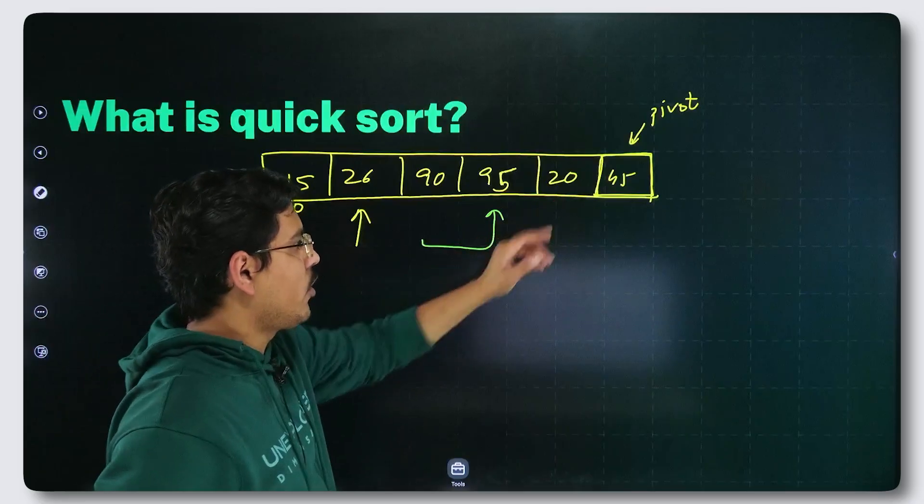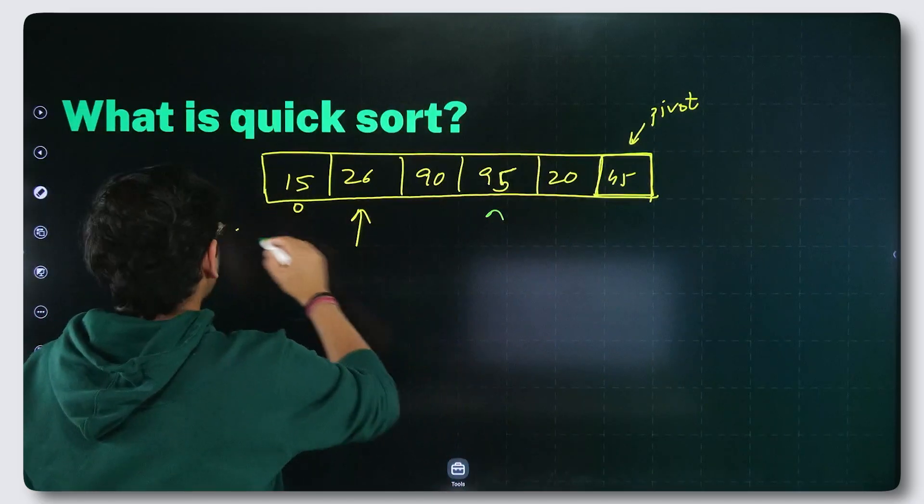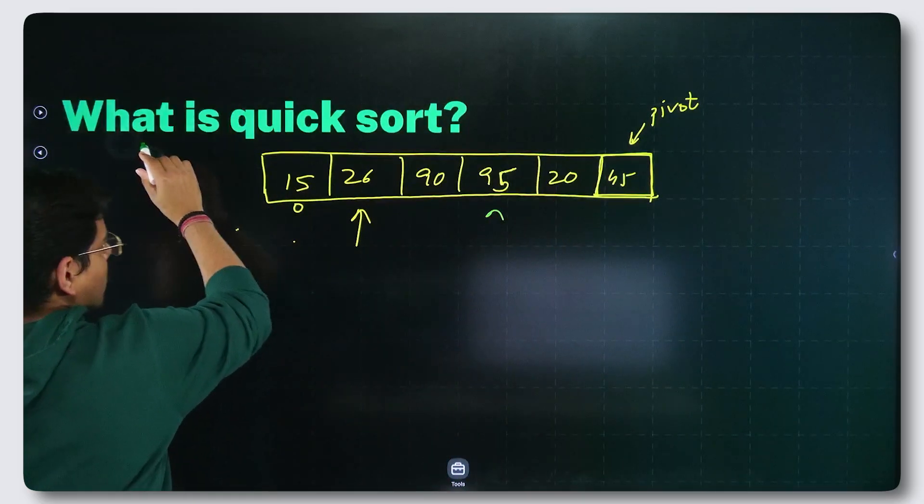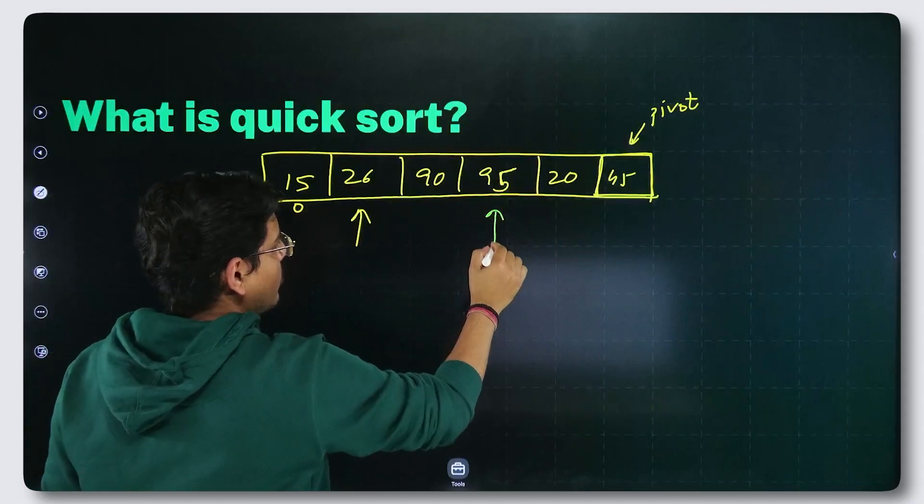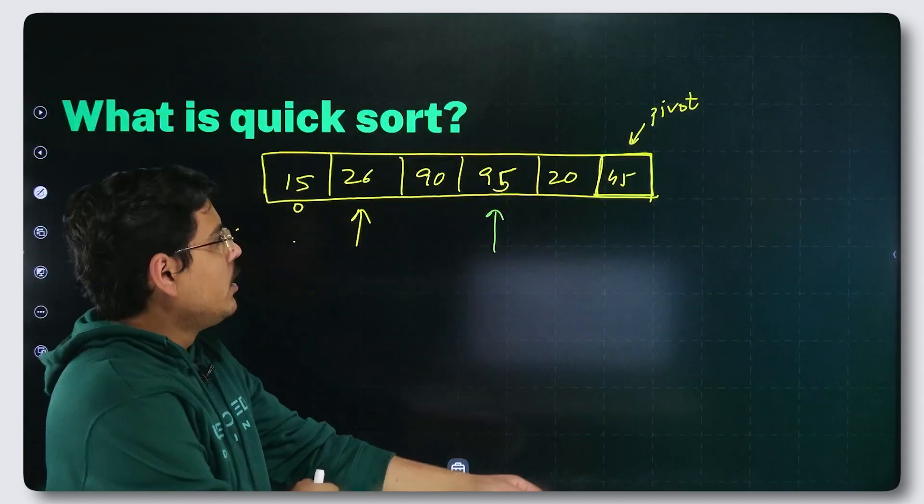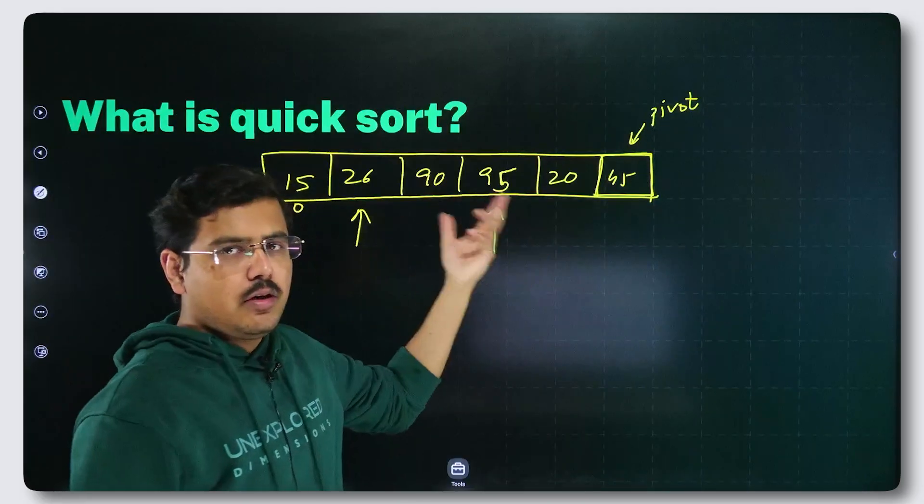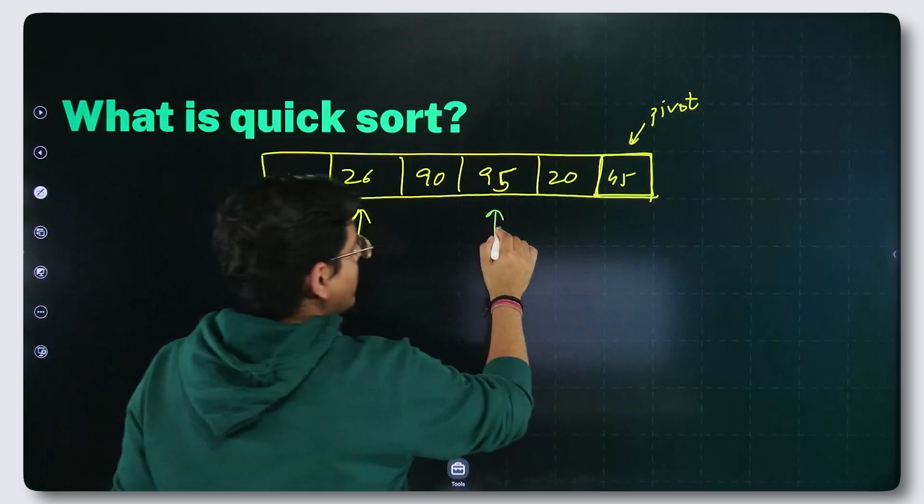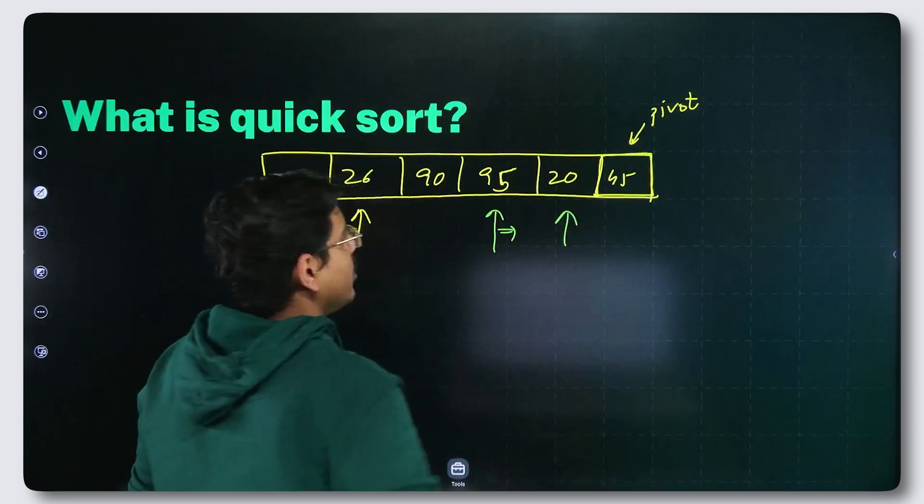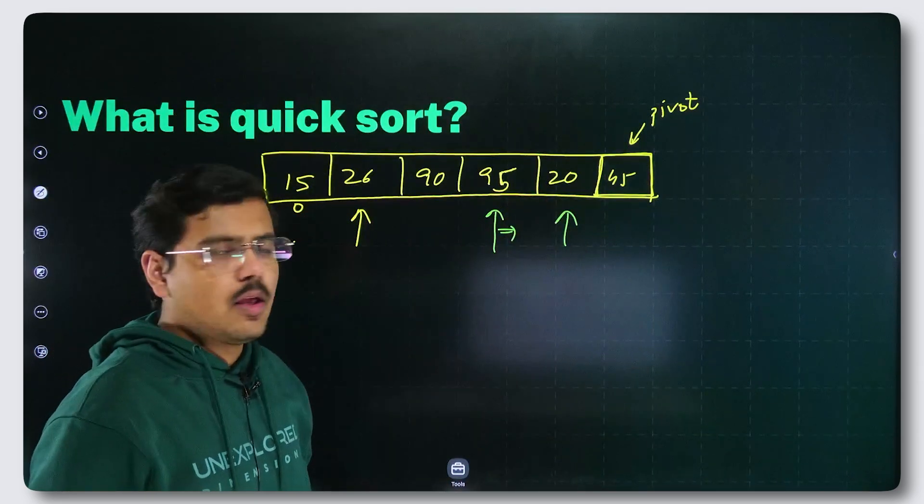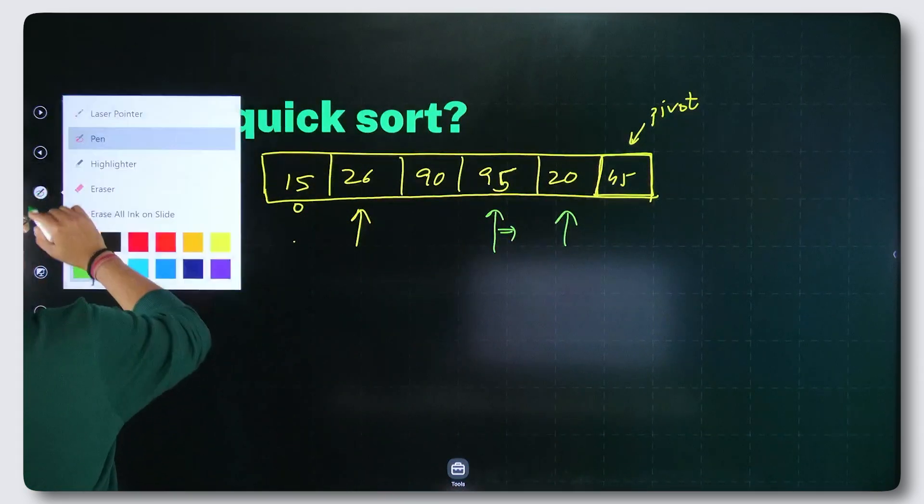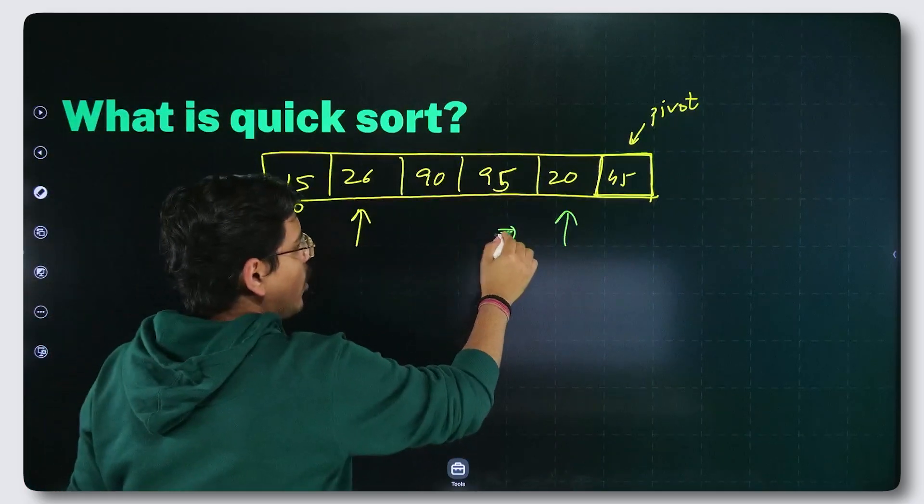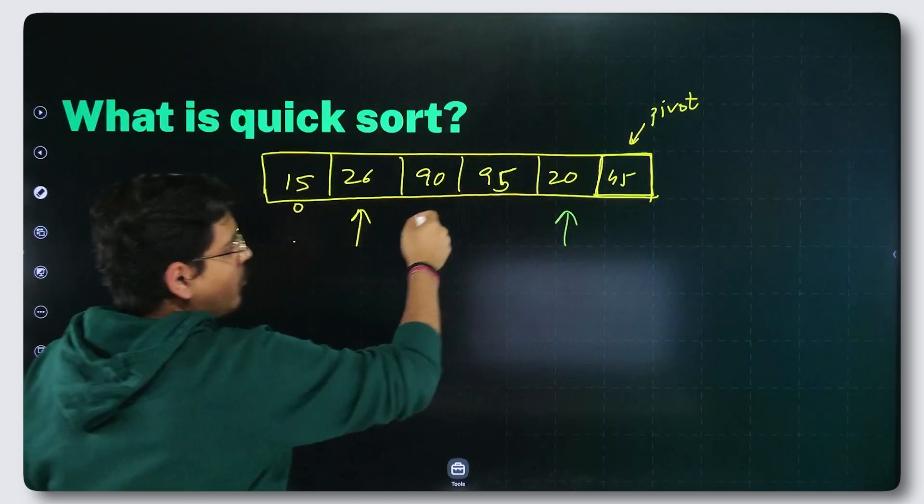So what you will do? You will do nothing. I told you, you will do nothing. Eat five star. Now when you check 95 and you need not do anything, you move further to check 20. This pointer comes here. You check 20. When you check 20, you find out that 20 is smaller than 45, the pivot.